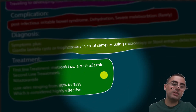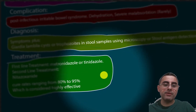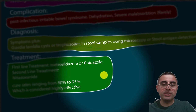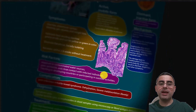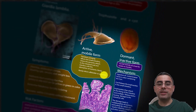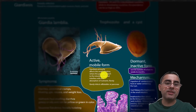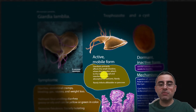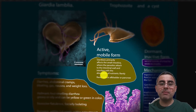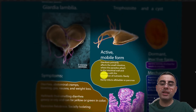Second-line treatment is nitazoxanide. The cure rate is very high, ranging from 80% to 95%. To summarize, Giardiasis is a parasitic infection that is more common among persons with a compromised immune system, the elderly, and children.